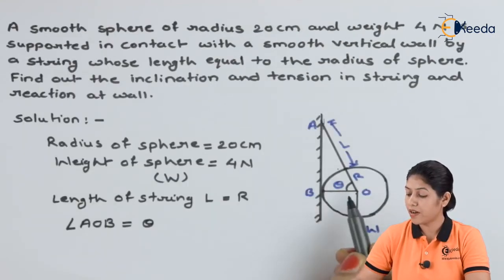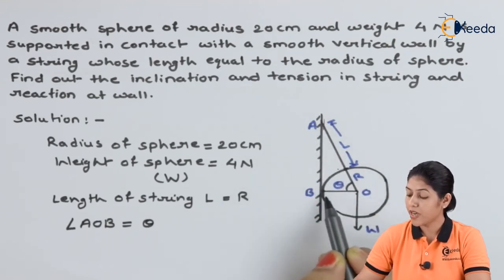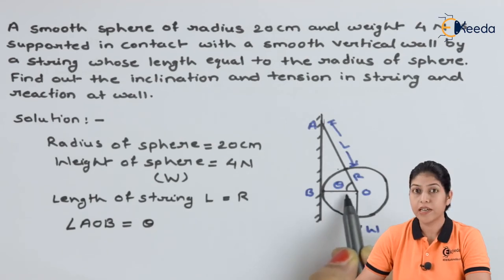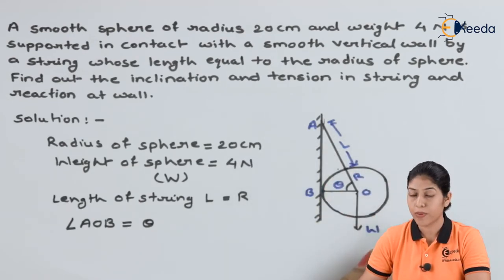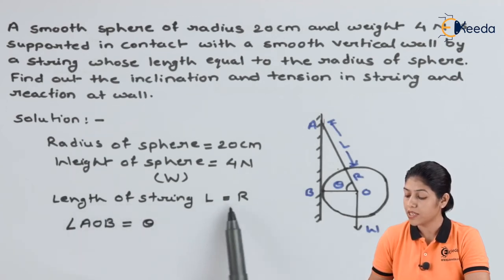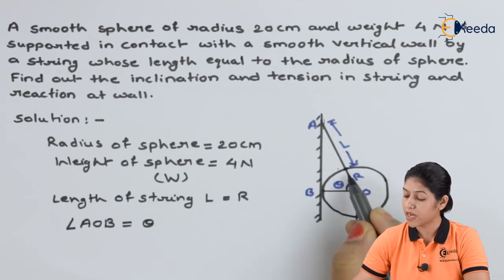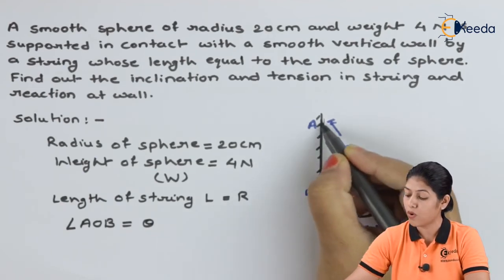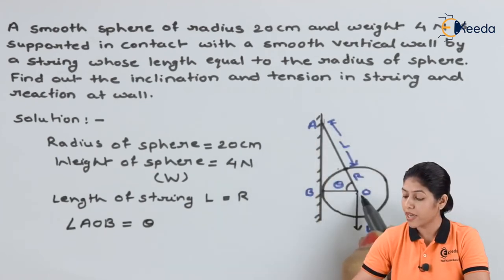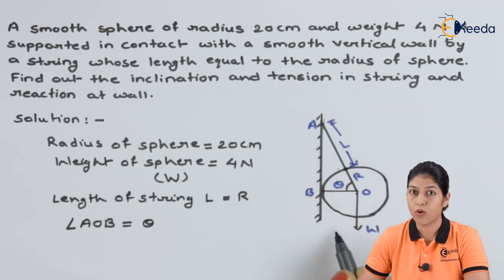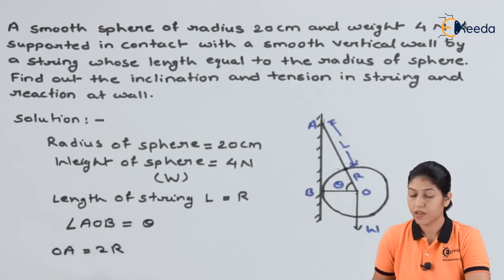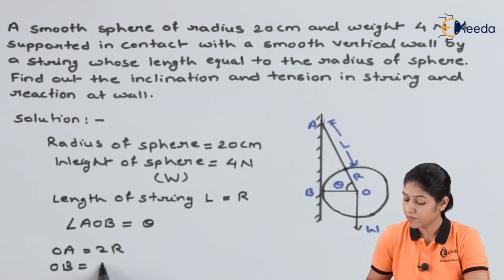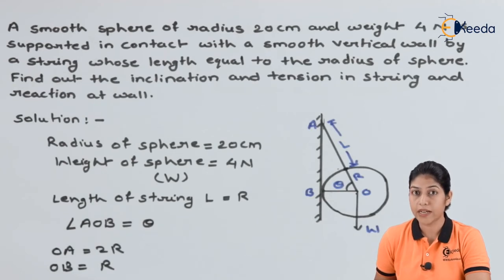In the actual diagram we are considering triangle OAB, and OB represents the radius of the sphere. The length of the string is represented by AB, and the condition given is that the length of the string equals the radius of the sphere. From the center O to the contact point on the wall is radius R, and from the center O to point A there is the string length. So the total length OA equals R plus R, making OA equal to 2R, and OB equals R.